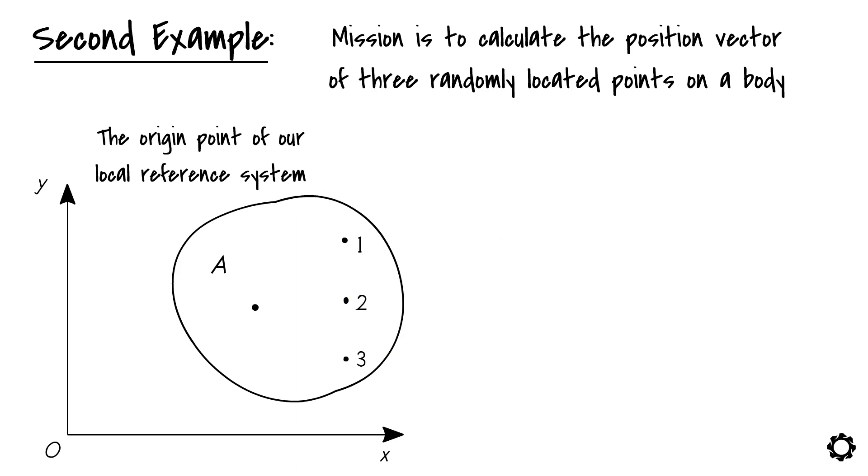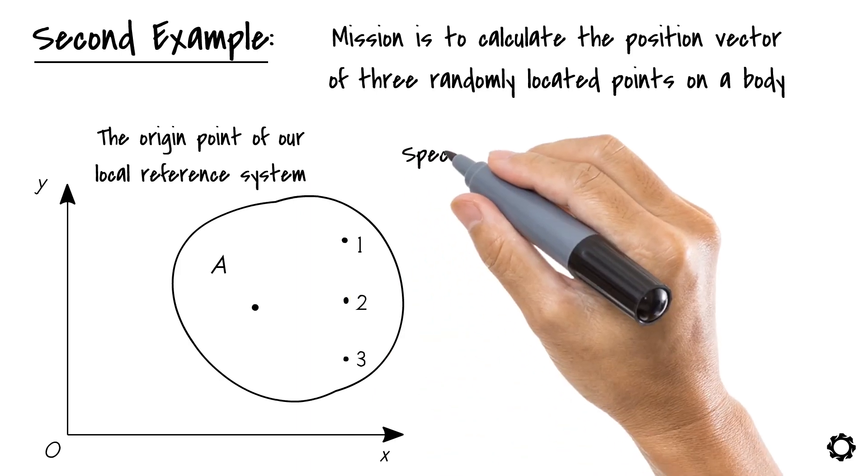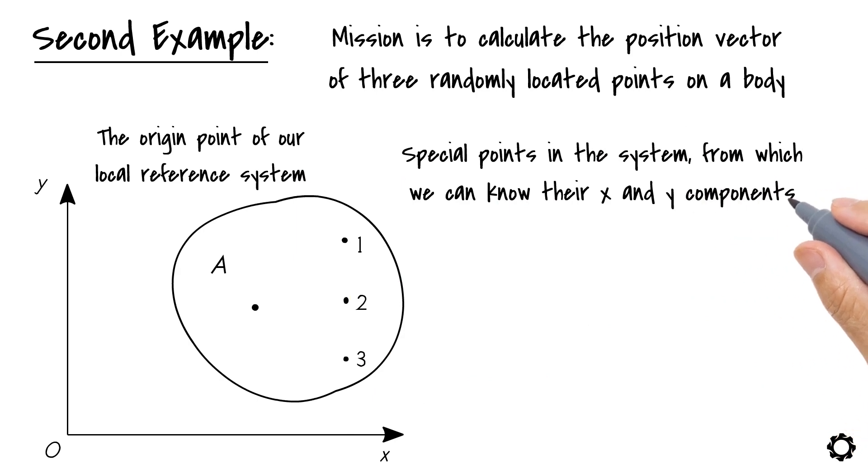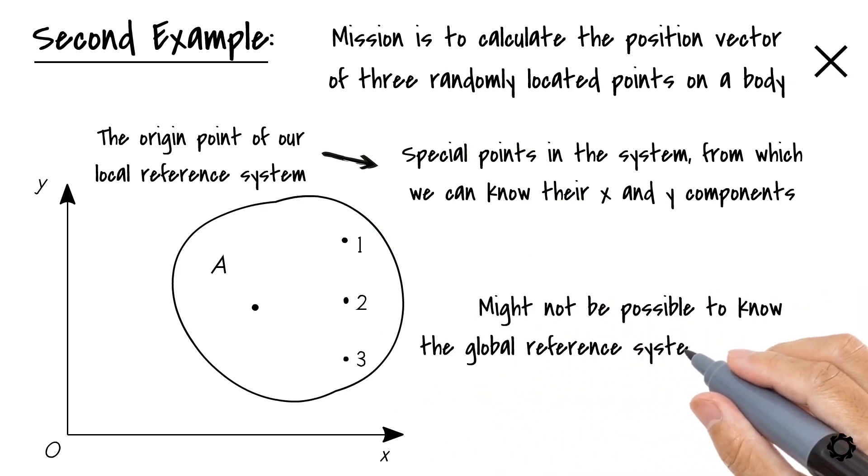Remember when I told you that there is a restricted number of points, special points, in the system, from which we can know their x and y components? Well, this is one of them. If not, this wouldn't work because it might not be possible to know the global reference system's components for these three points. They are arbitrarily located.